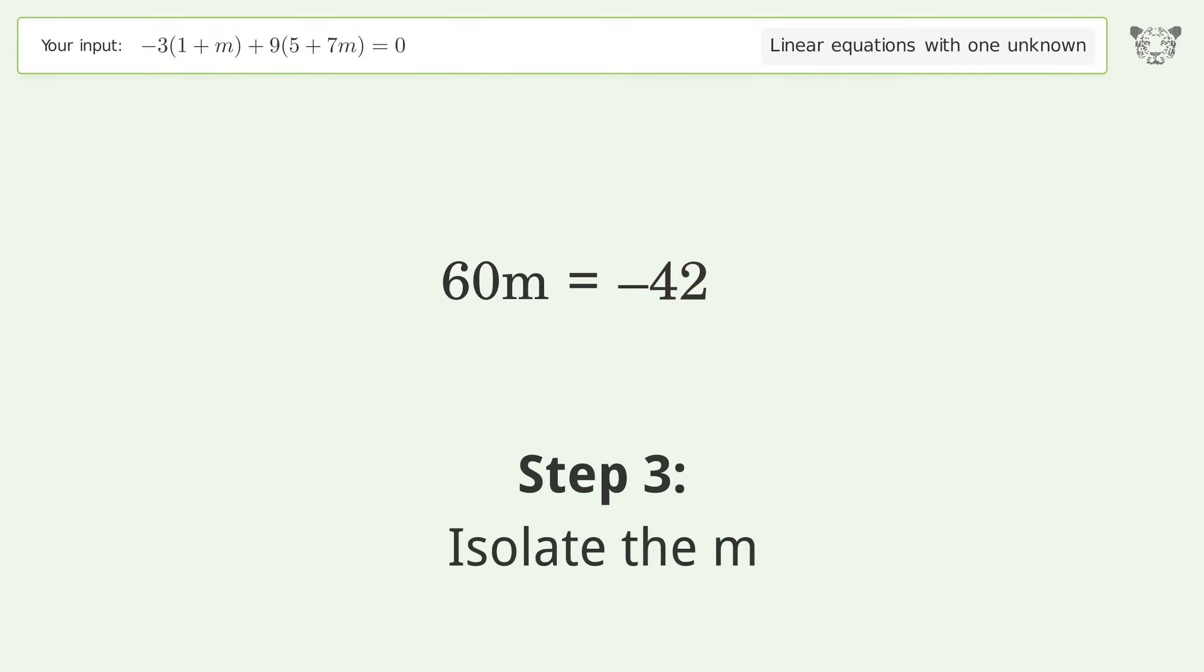Isolate the m by dividing both sides by 60. Simplify the fraction.